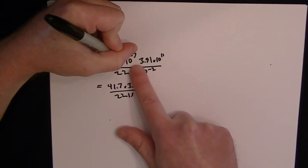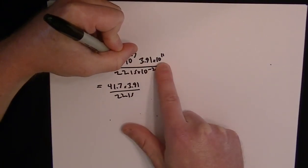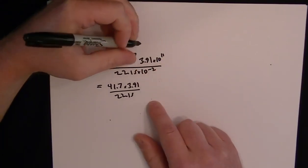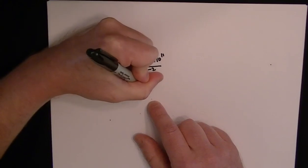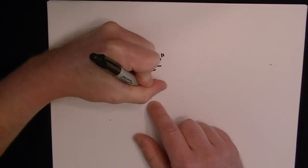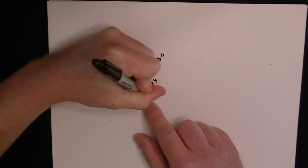Because we have 10 to the minus 7 being multiplied by 10 to the 11, you can add the exponents. So negative 7 plus 11 is going to give you 10 to the 4. And then on the bottom, we still have our 10 to the minus 2.